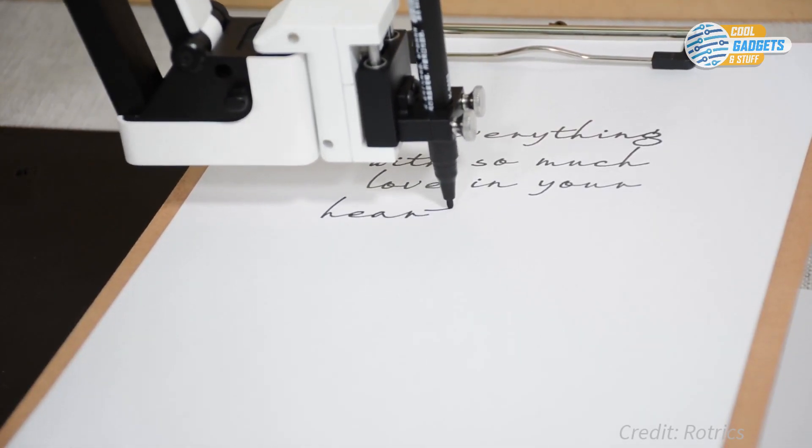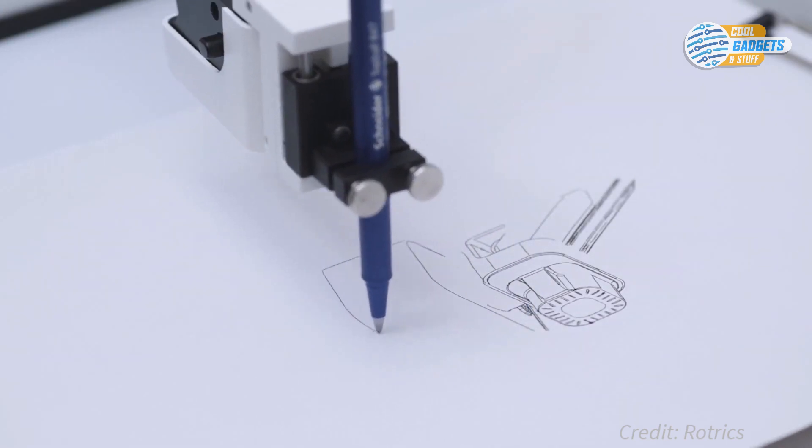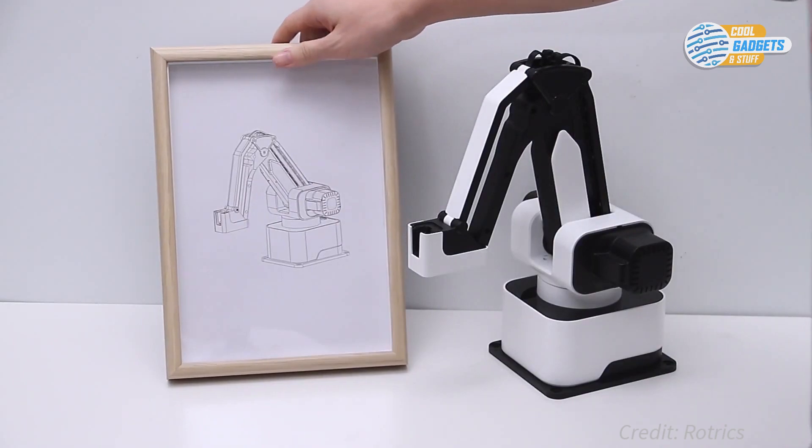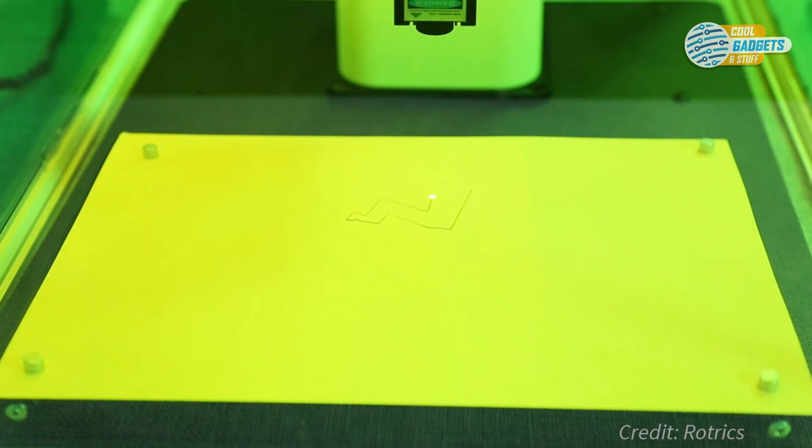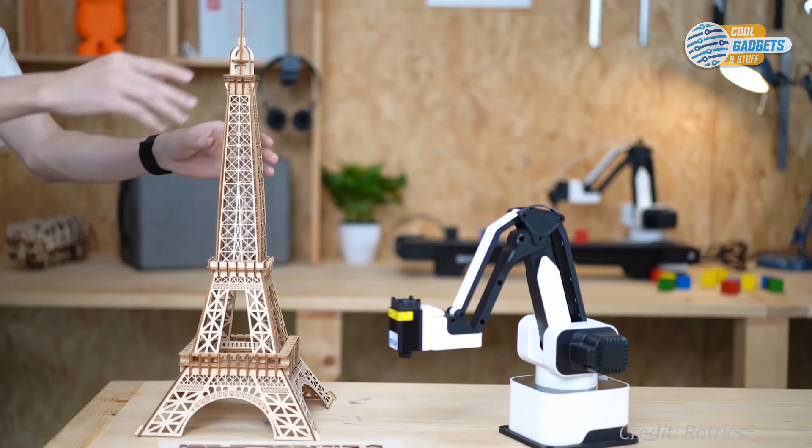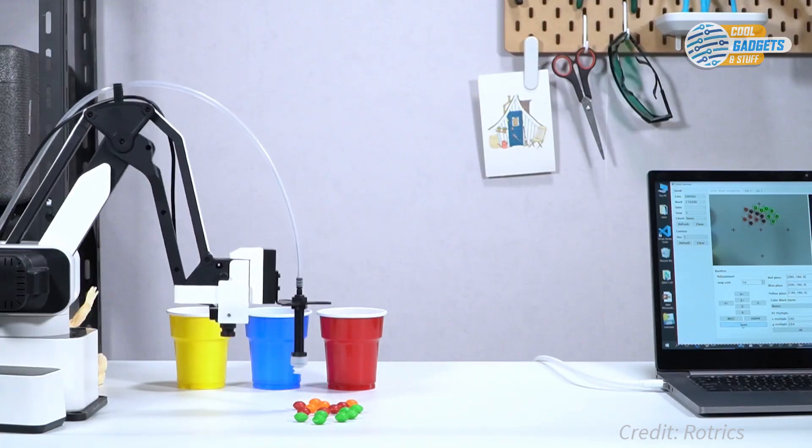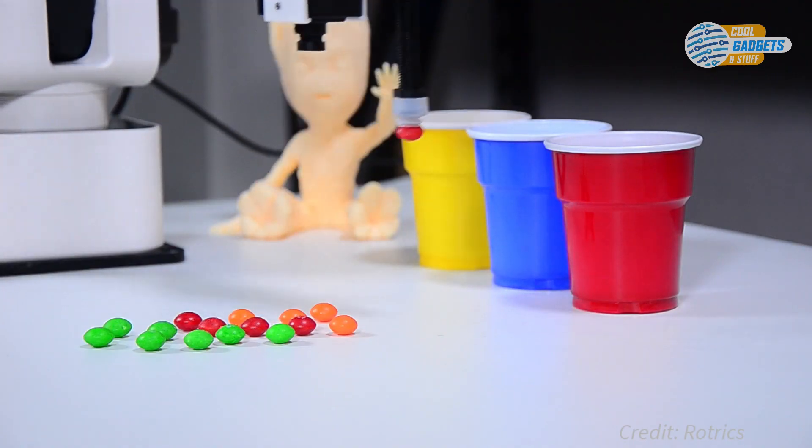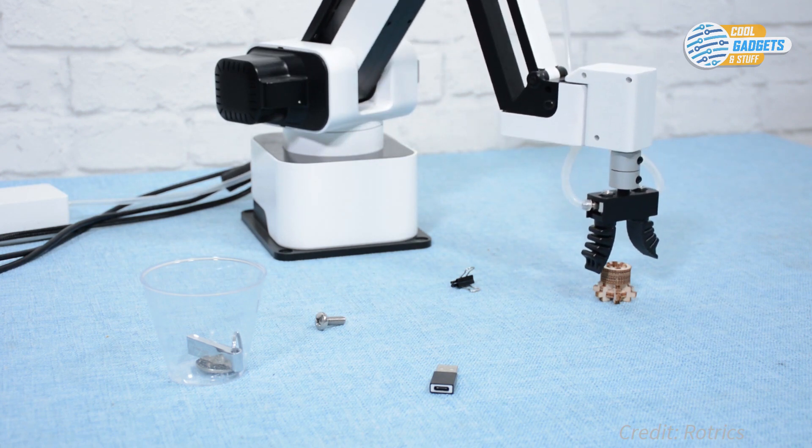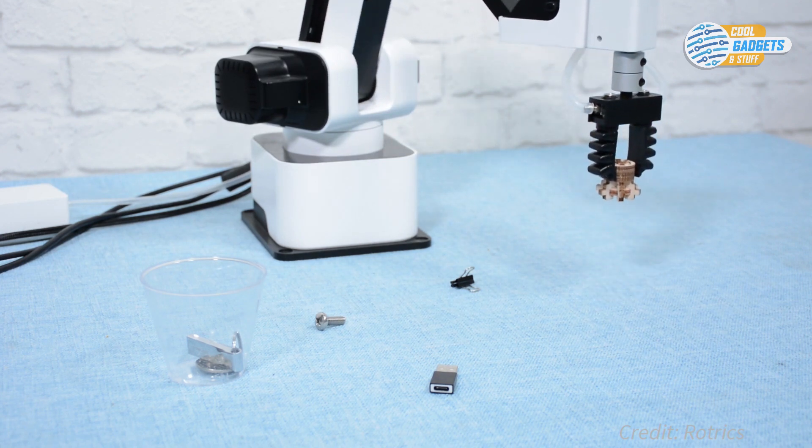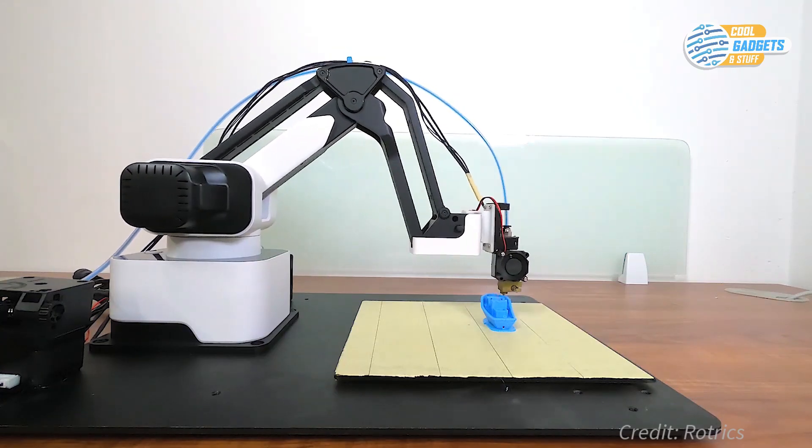With the pen holder module, DexArm can write a beautiful handwritten letter or draw a custom illustration. The laser engraving module is capable of cutting and engraving on wood, leather, paper, and other materials. Picking and placing objects can be easily performed with the help of a suction cup and soft gripper. It's perfect for lightweight, repetitive industrial tasks. Its 3D printing module can print large items using many 3D print filaments.